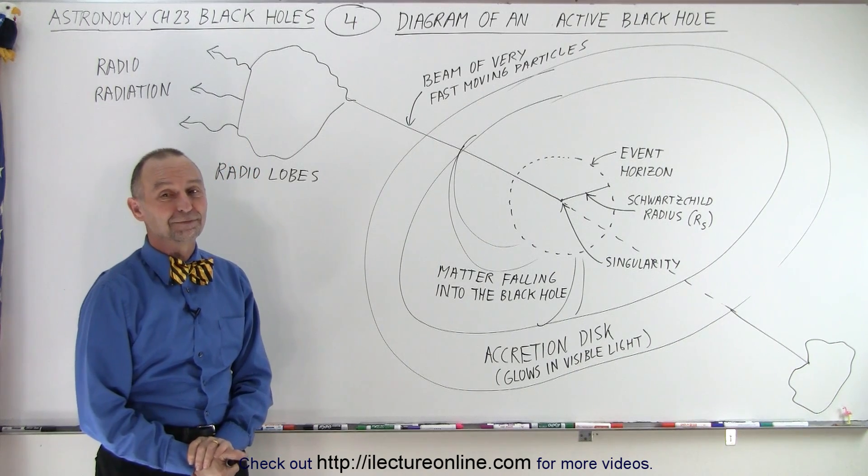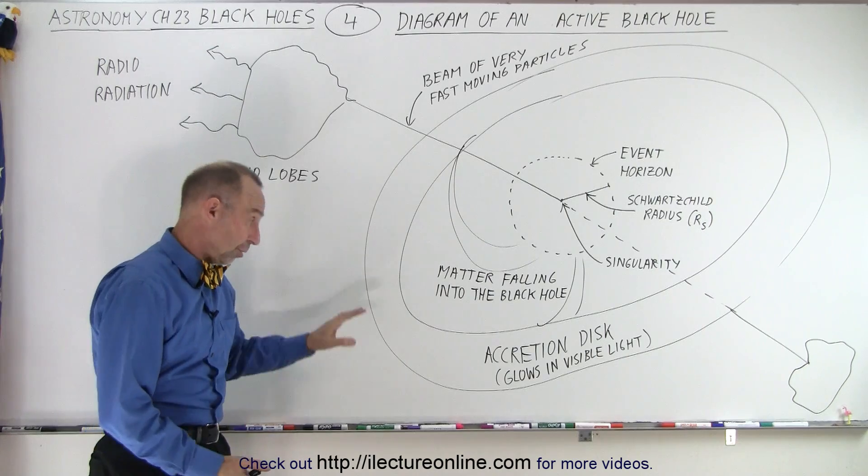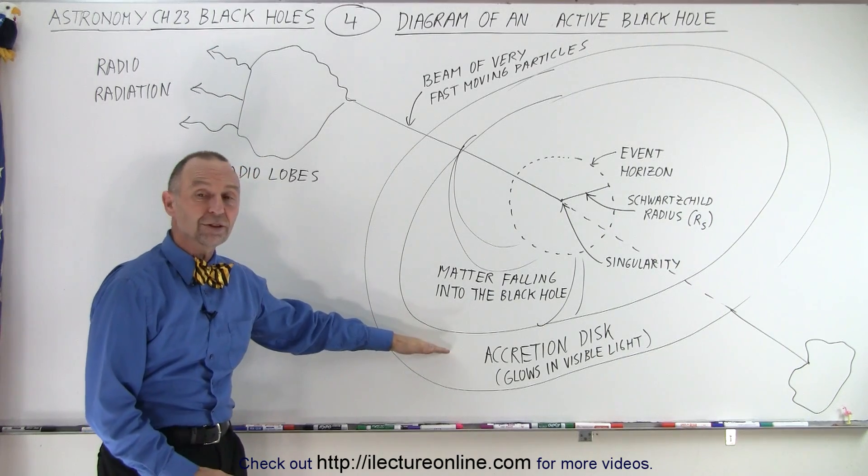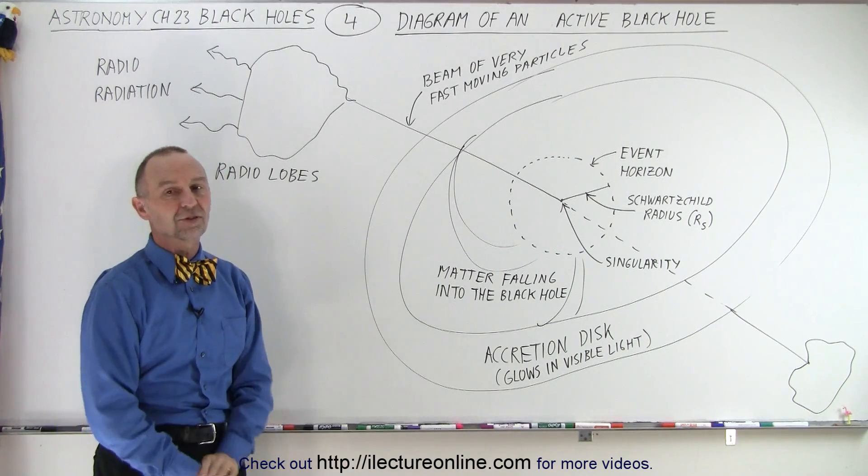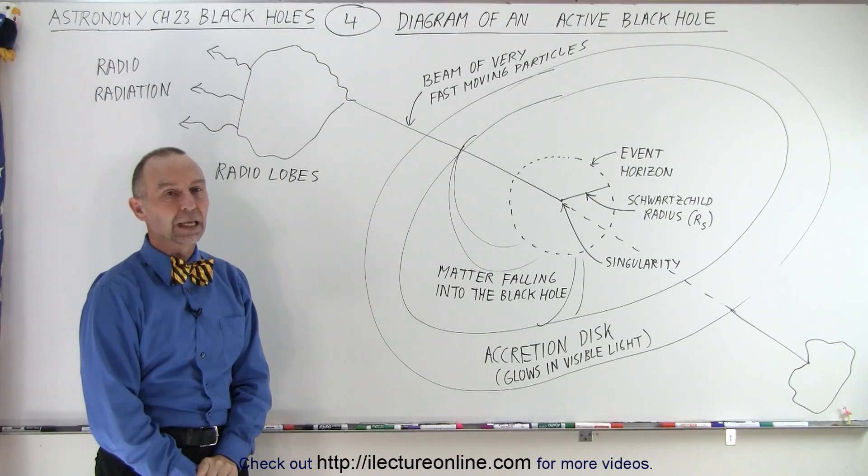I thought you said you could tell by the accretion disk? We can sometimes also tell, but that's much more difficult to photograph than the very powerful radiation of the radio lobes, which is much bigger and much easier to see.